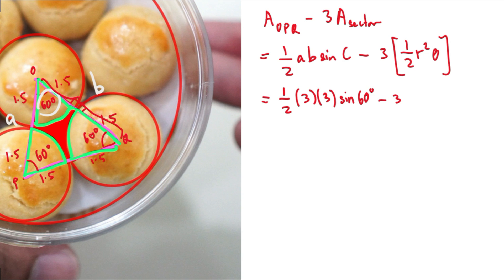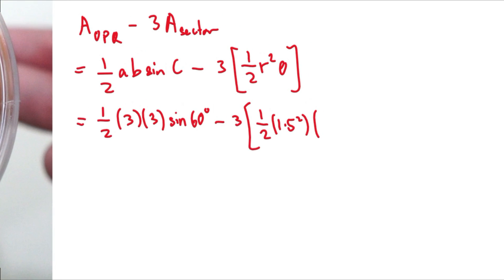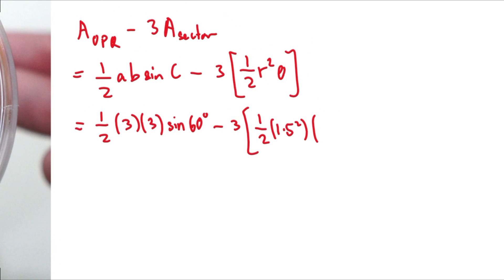Subtract three times one over two R square. So R here refers to the radius of the sector. So the radius of the sector is just 1.5. So this will be 1.5 square and theta. Now remember, when we use the formula one over two R square theta, theta must be in radians. Therefore, we need to convert this to radians. And so this will be 60 times pi over 180.